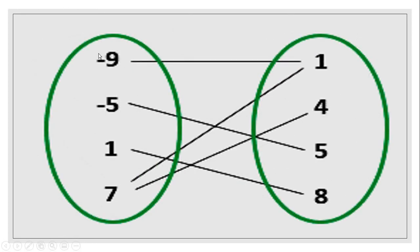Another example: Here also we have two sets. -9 is pairing with 1, -5 is pairing with 5, 1 is pairing with 8, 7 is pairing with 1, and 7 is pairing with 4. This is also a binary relation.